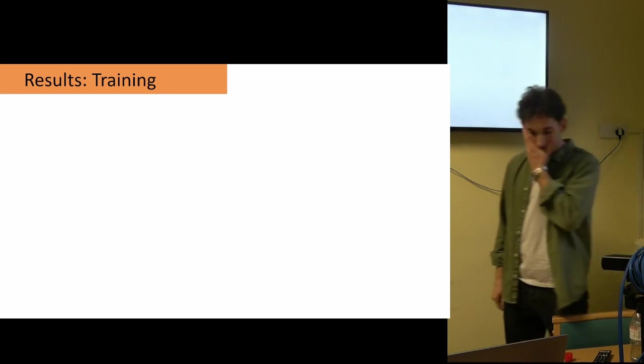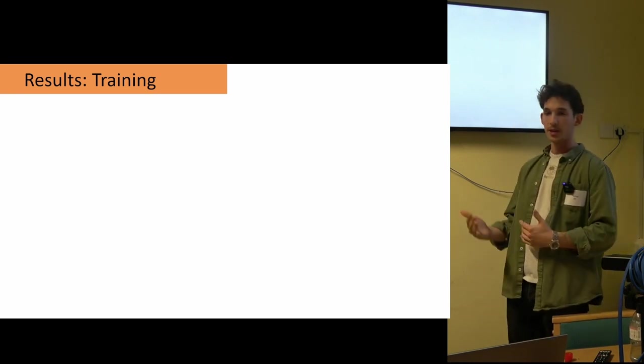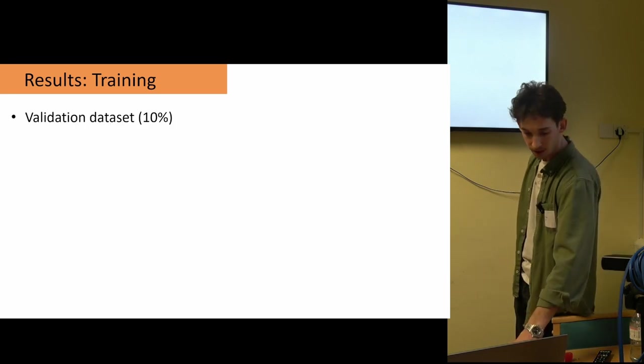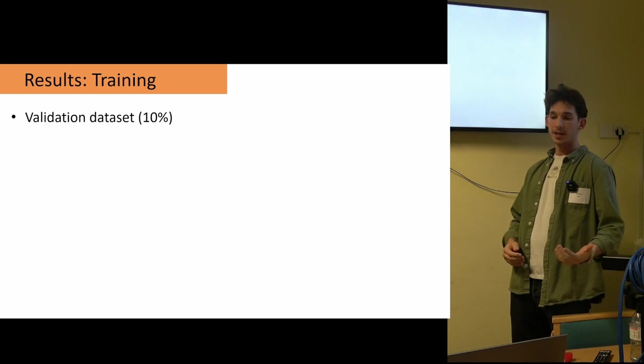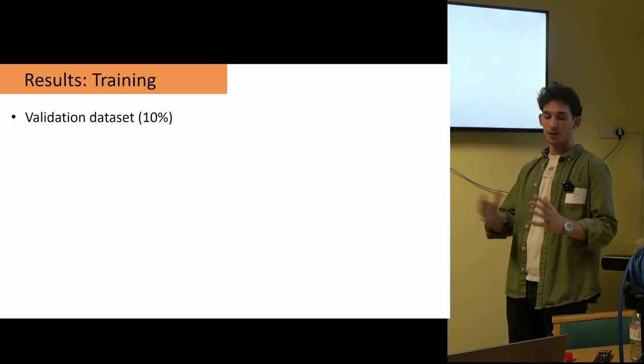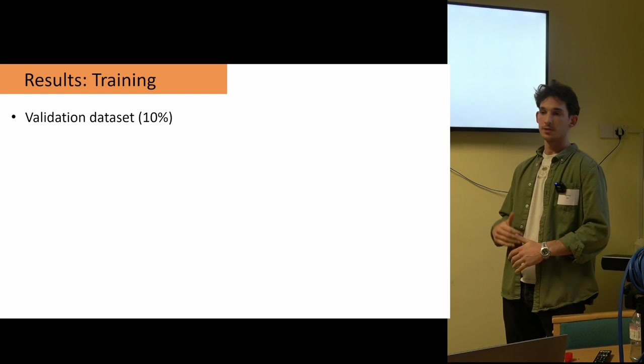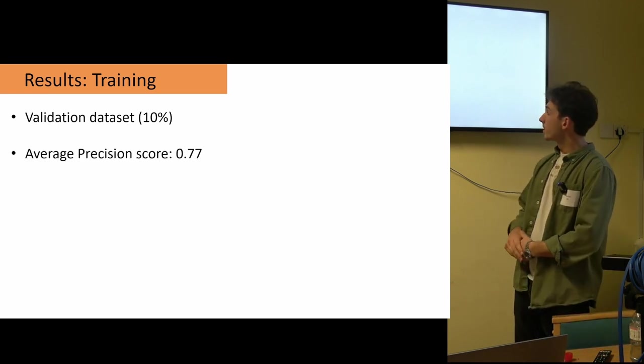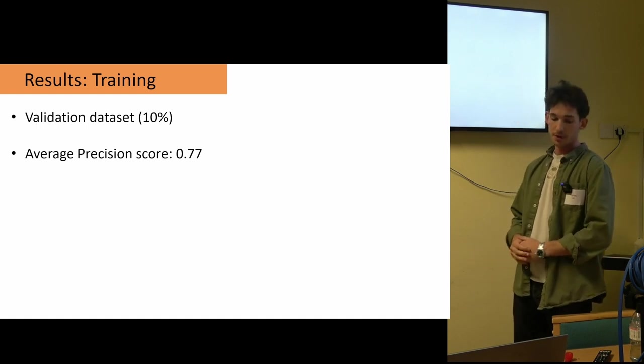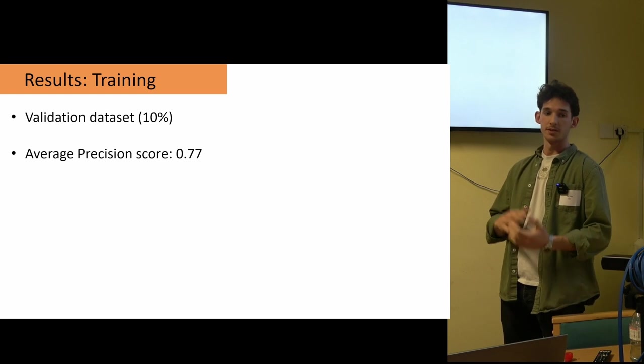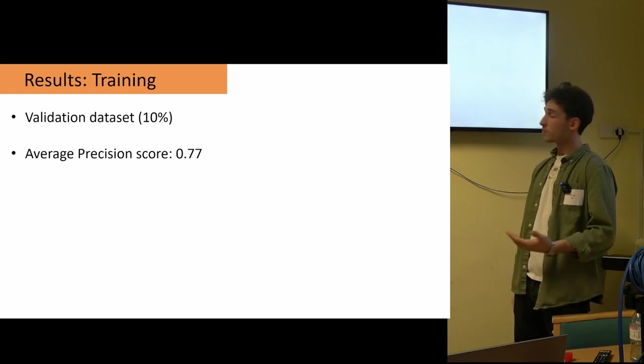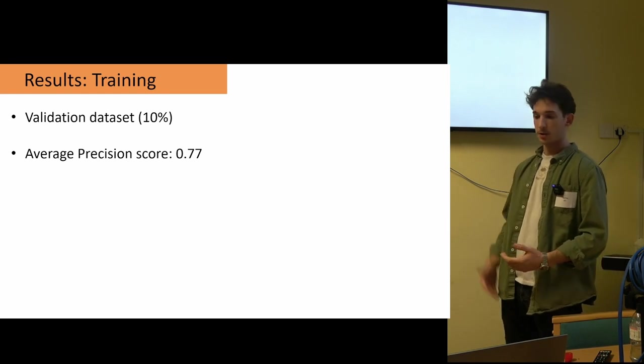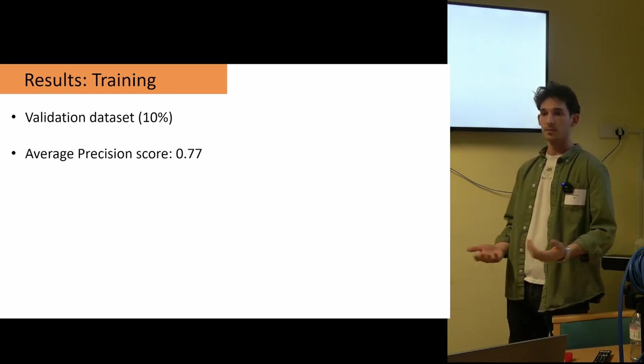So the first round of results I was getting was from the training stage, and this was to see how well the model was performing from the training data. Partly this is generated from a validation dataset, which is a specified amount of data withheld from the original training data in order for the model to test and evaluate its own performance. From this, we get an average precision score. Precision is the percentage of accurate detections out of the whole. Both models got 77%, which is pretty high. It was really encouraging to see. Not too surprising that they were the same as they were trained on the same data.